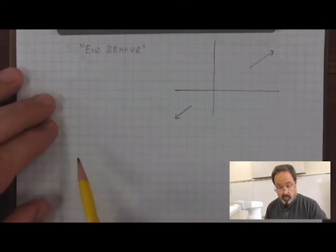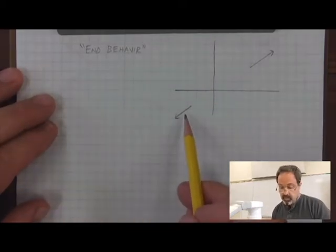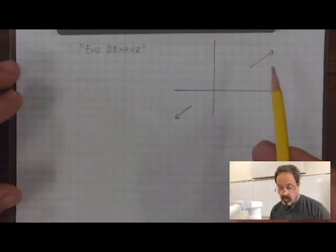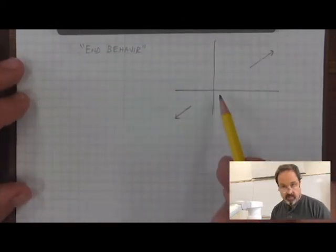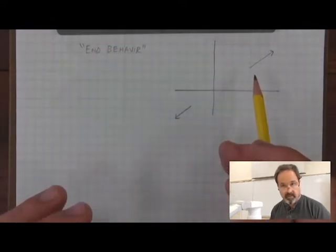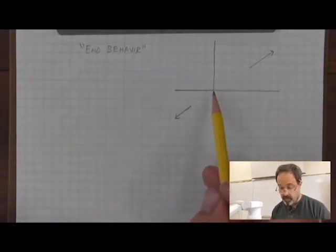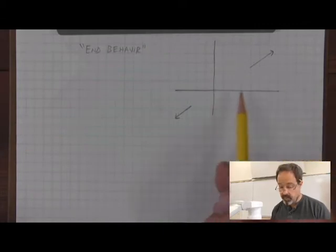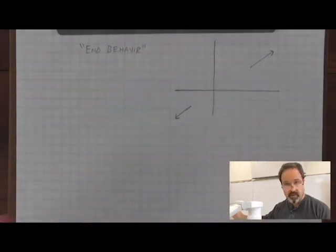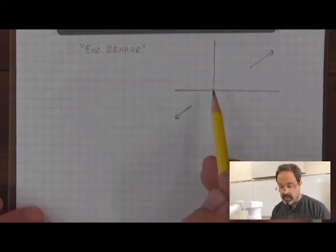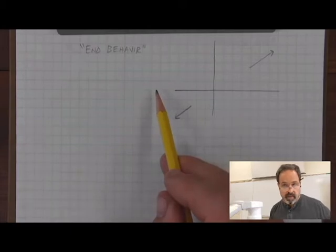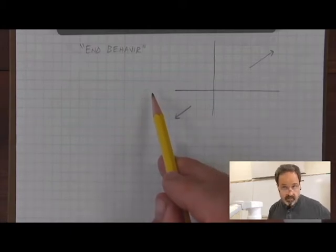Formally, what we're looking at to give us the behavior of the function when we have those arrowheads on those two ends are the infinite limits. The limit of the function as x goes to positive infinity, that would be looking to the right as the function continues to the right. And the limit of the function as x goes to negative infinity, that's what is happening on the left end of the function.